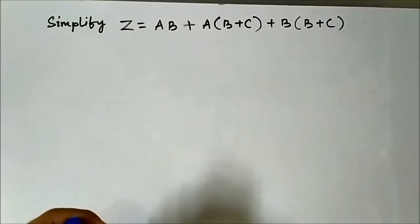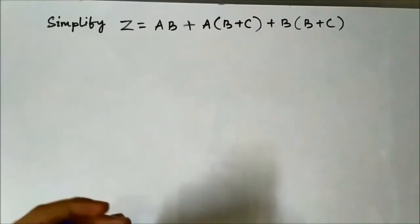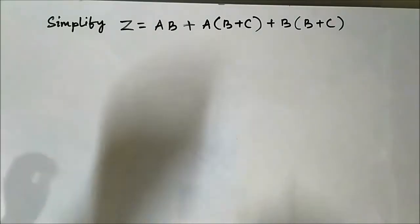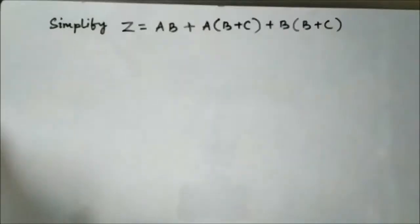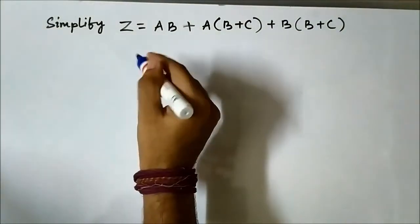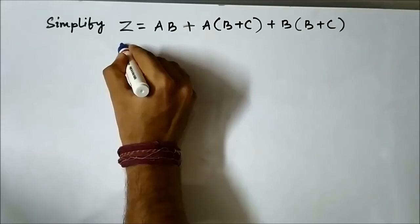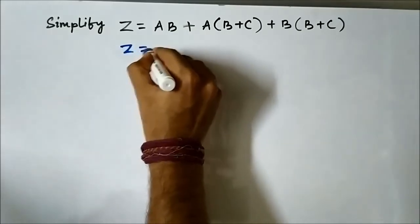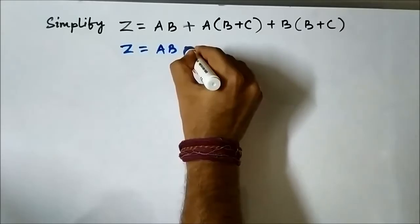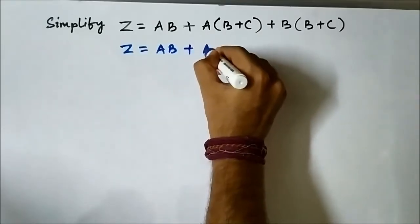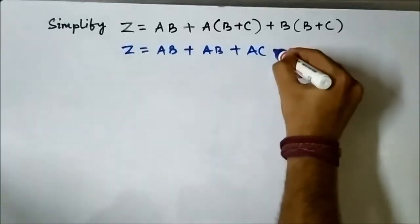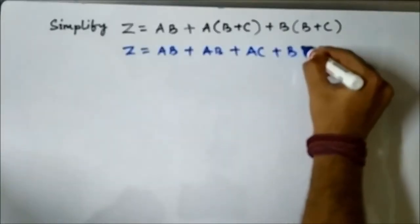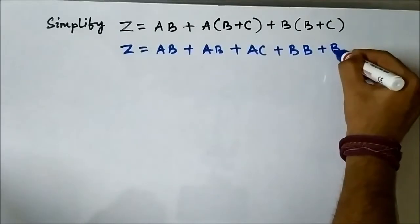So here we have a Boolean expression and we have to simplify it — meaning we have to reduce it into a simpler expression. So let us do it. Let us start by opening up the brackets. We can write z equals ab plus ab, opening the bracket, ac plus a into b, plus bc.